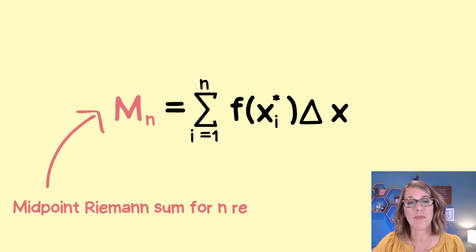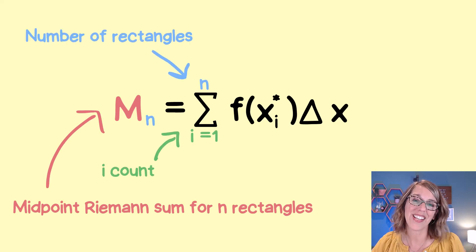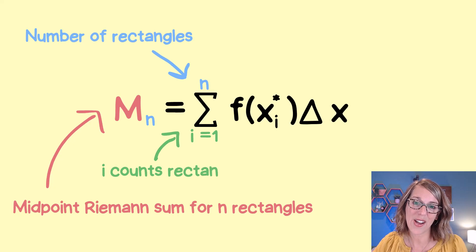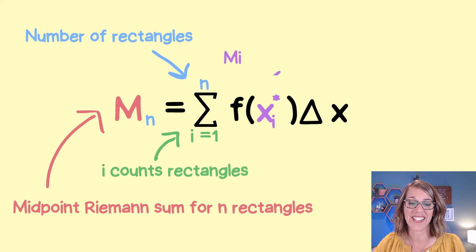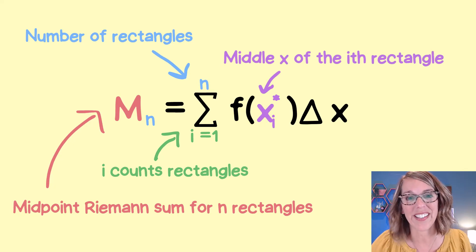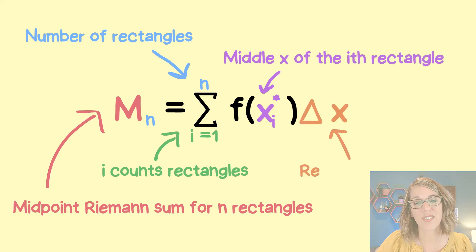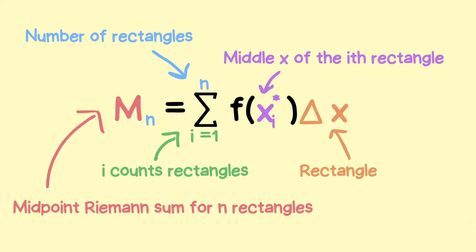This gives us our midpoint Riemann sum formula, M sub n. Here n is the number of rectangles, i is our index counting up to n, x sub i star is our sample point at the midpoint of each interval, and delta x is our consistent rectangle width.